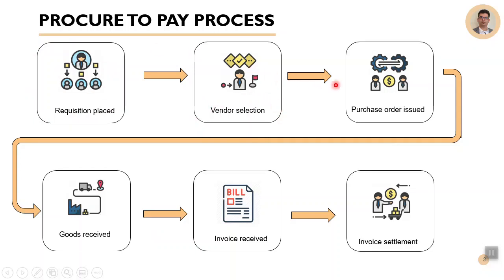Once these two steps are completed, we go to the next stage which is creation of the purchase order. At this point we have selected the item to be procured and the vendor selection is completed. Some organizations can directly start from the purchase order process in procure to pay, skipping the earlier steps, but it all depends on the business requirements of the client and the organization.